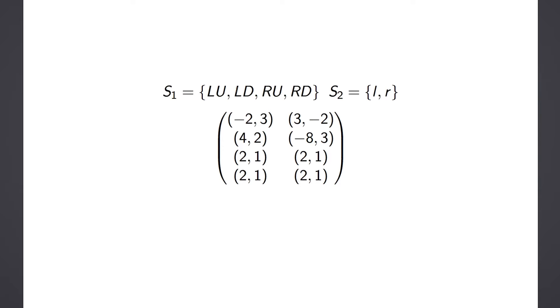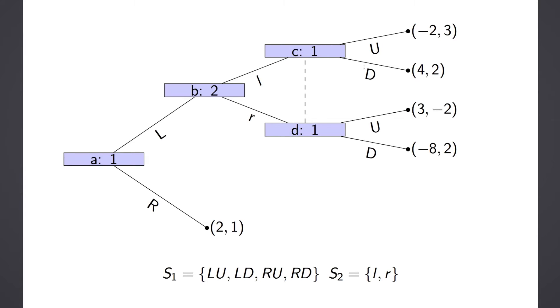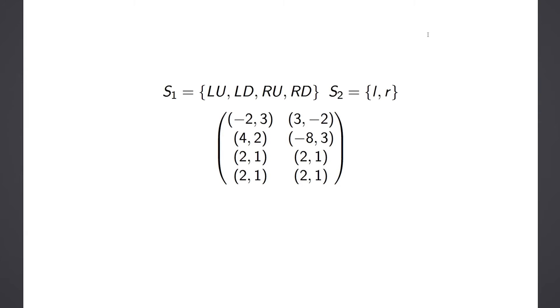So that minus 2, 3 simply comes from here, where it was the first strategy against the first strategy. So it's LU against little l. So L against little l against big U, minus 2, 3.